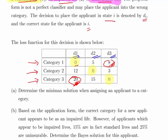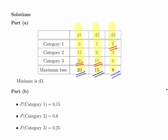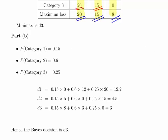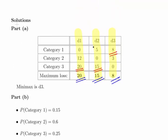Determine the minimax solution when assigning an applicant to a category. If you're an actuarial student, it's what the minimax gives you—it doesn't mean it's what you have to do. Now we're going to look at the Bayes criterion, which is based on the expected values of the losses under each decision.